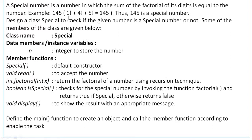For example, 145: 1 factorial plus 4 factorial plus 5 factorial is equal to 145 again. Since it is equal, we declare it as a special number.